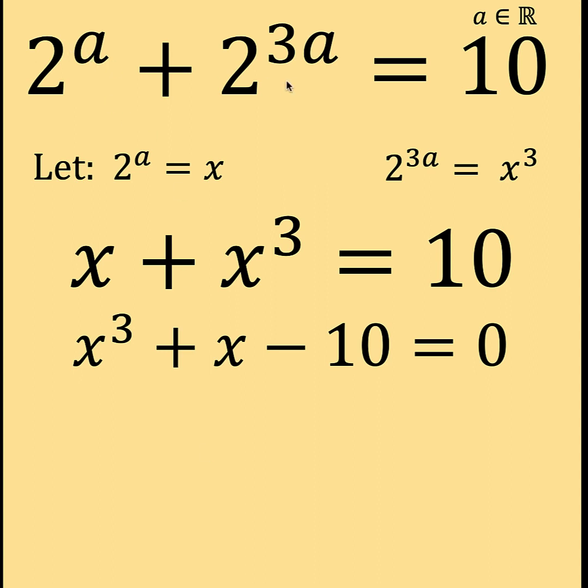By inspection, looking at the original equation, one can easily see that if you let A be equal to 1 then you will arrive at a correct equation because 2 raised to 1 is 2, 3 times 1 is 3 and 2 raised to 3 is 8, 2 plus 8 equals 10. But since this is a math Olympiad question, we cannot just simply assign a value for A and claim that is the solution. Also, even if you know that A equals 1 can be one of those solutions, notice that we are expecting 3 roots. We are not sure whether those 3 roots are all real numbers or a combination of real and imaginary roots.